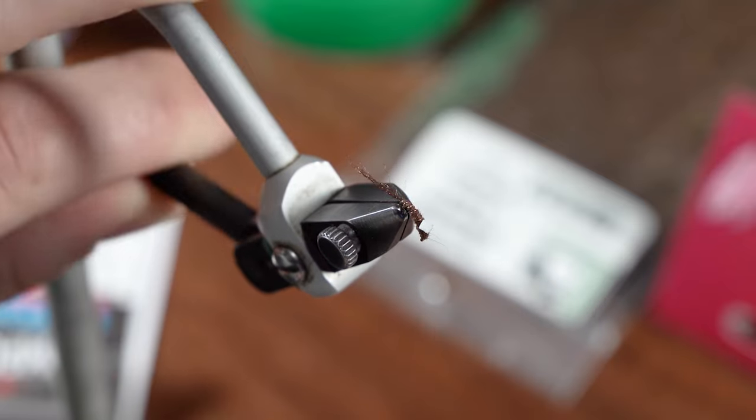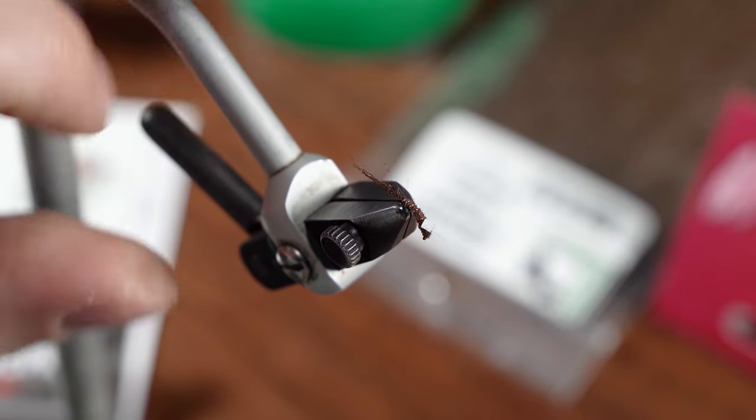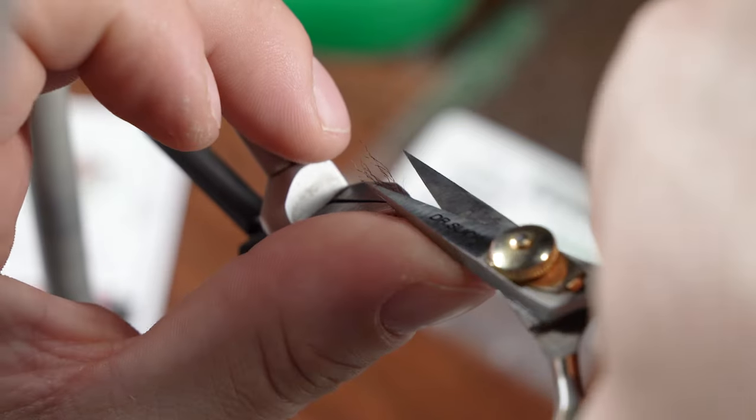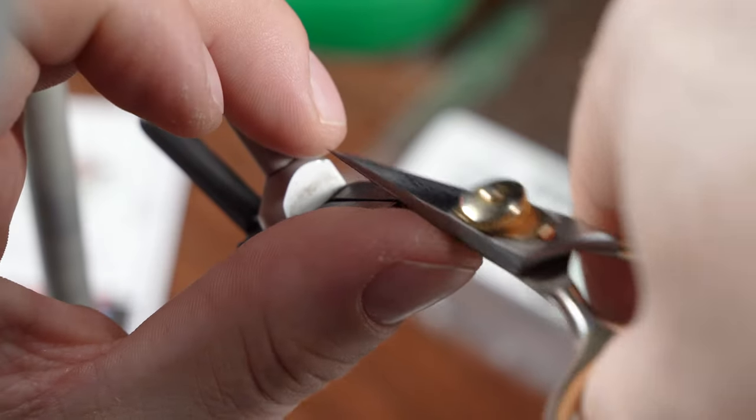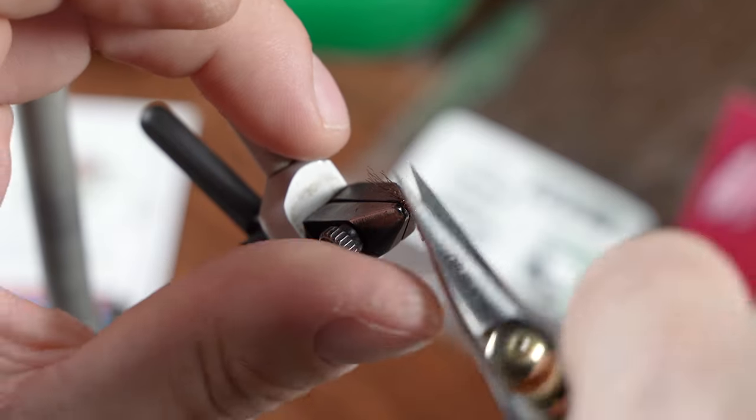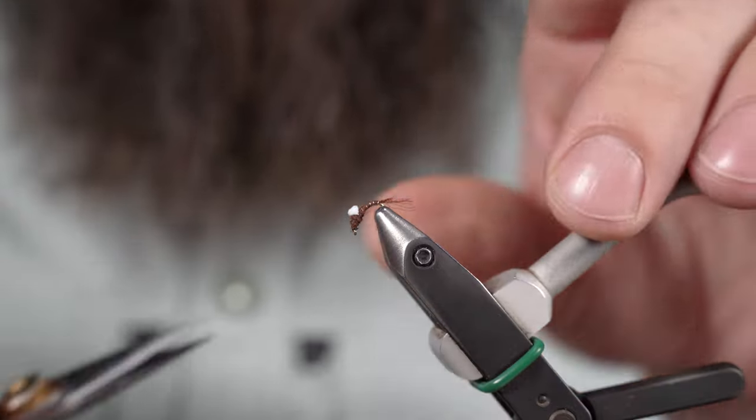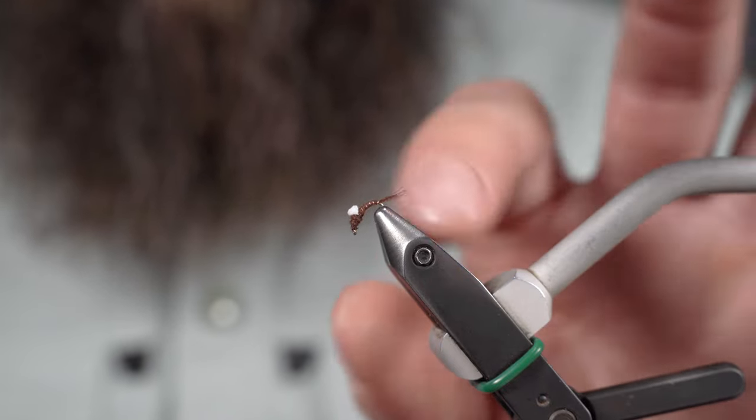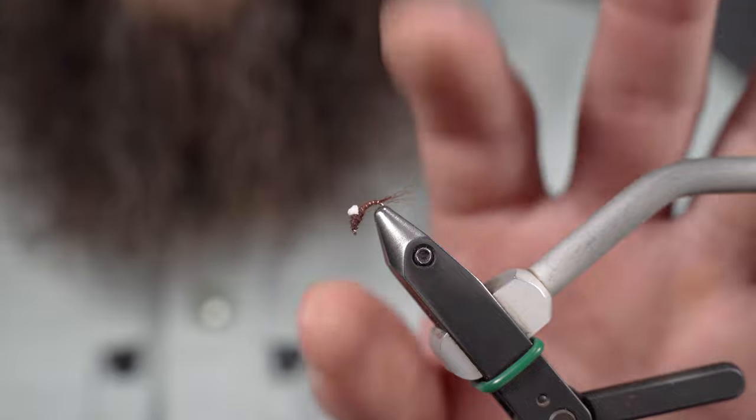Kind of tilt that fly up. Get that tail exposed. I'm just going to kind of trim this at an angle here. So I don't have a real clean flush cut. Just fluff it up a little bit. Give it that kind of shuck effect.